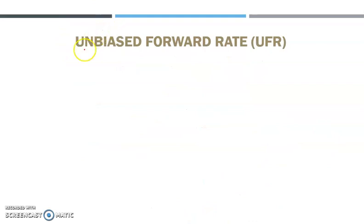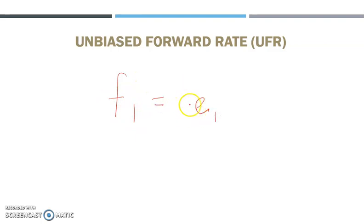The last one is the unbiased forward rate. What is unbiased forward rate? It explains the relationship between the forward rate and the futures forward rate, which is heavily influenced by current expectations of future events. There's not much to discuss about the unbiased forward rate because the formula in this parity is simply F1 equal to E1. So when the future rate is RM3, your forward rate is also RM3 — the forward rate is equivalent to the future rate.